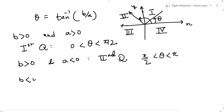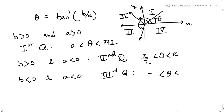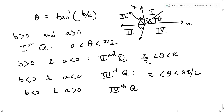Similarly, if b is negative and a is negative, we are in the third quadrant. And if b is negative and a is positive, we are in the fourth quadrant, where the angle lies between 3pi/2 and 2pi.